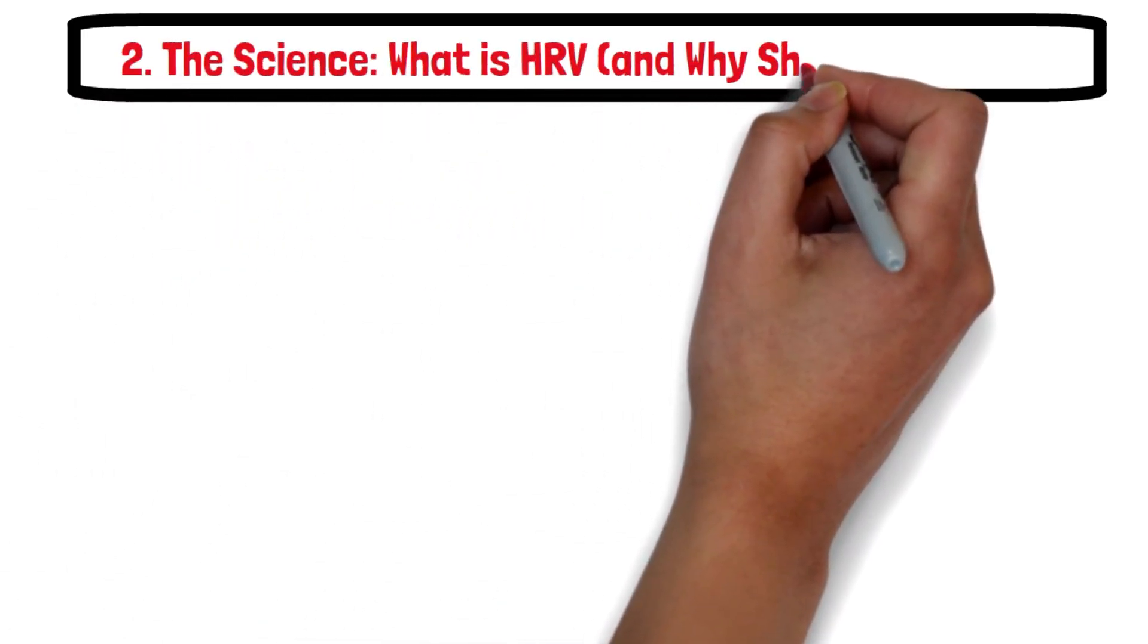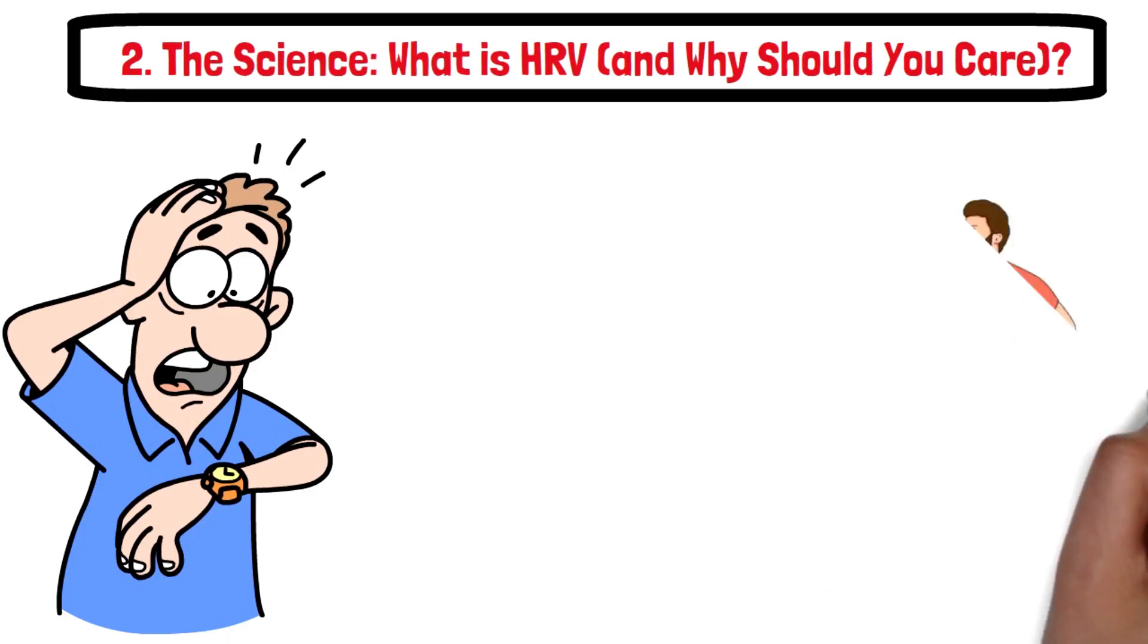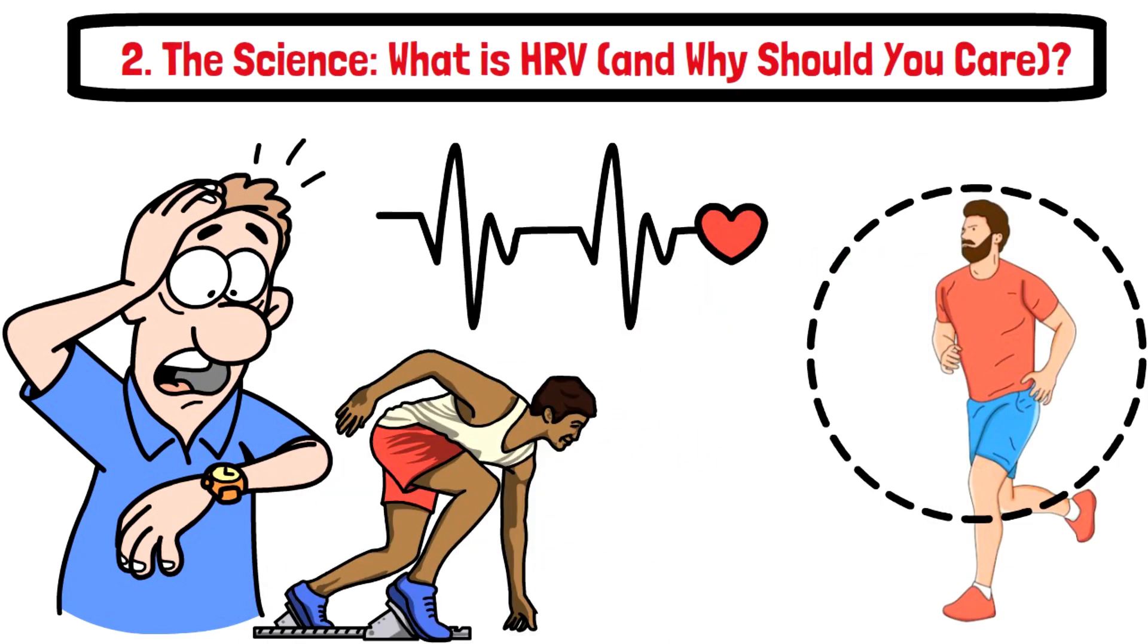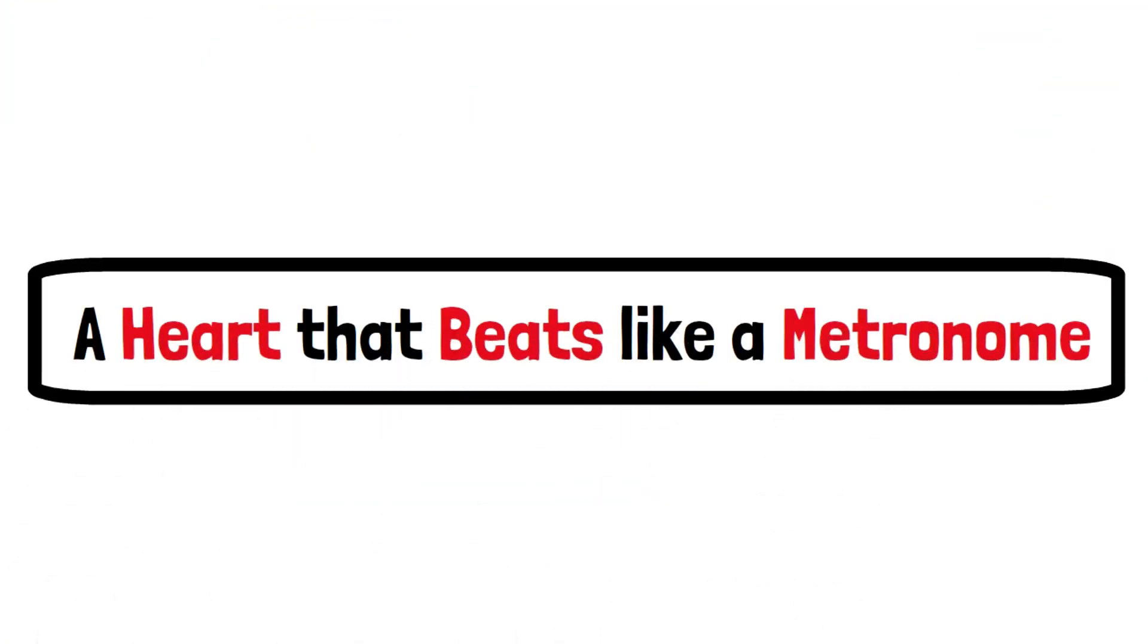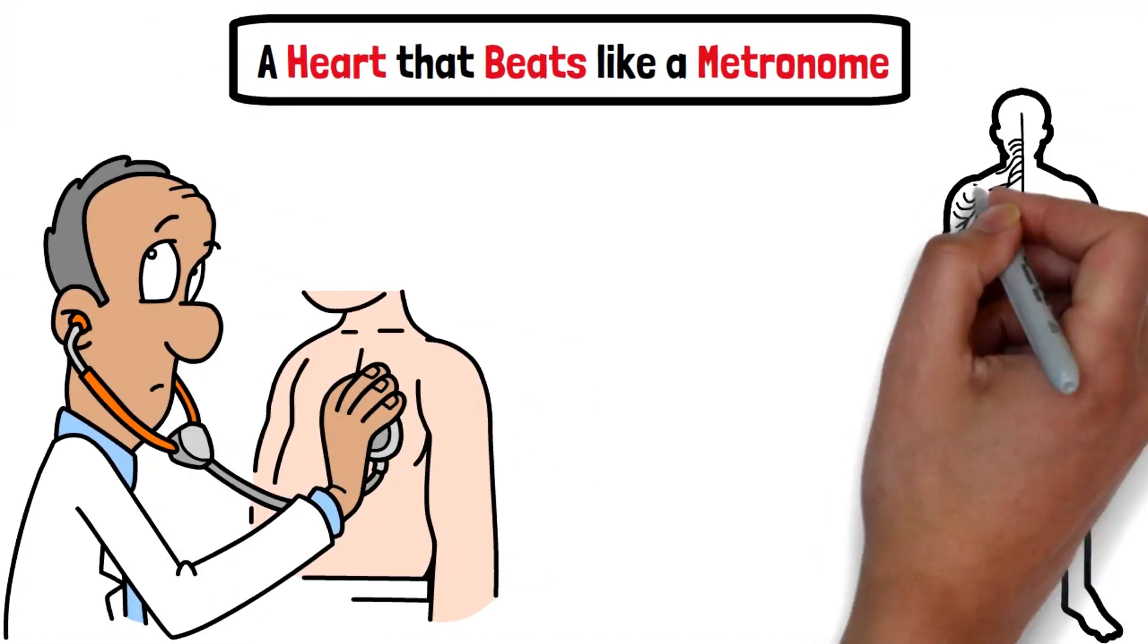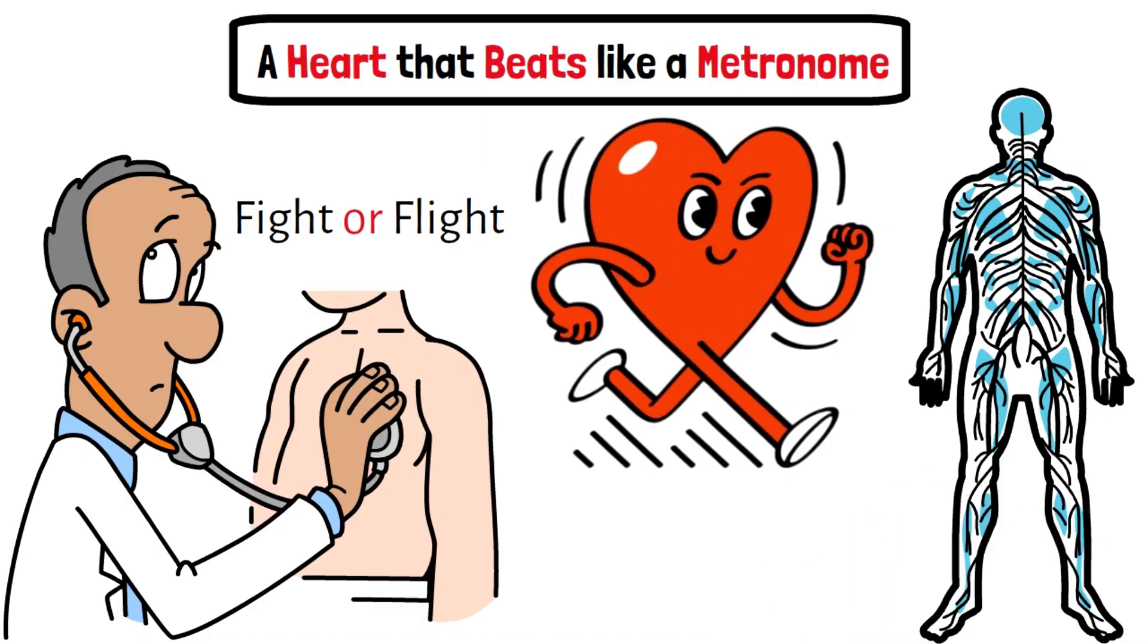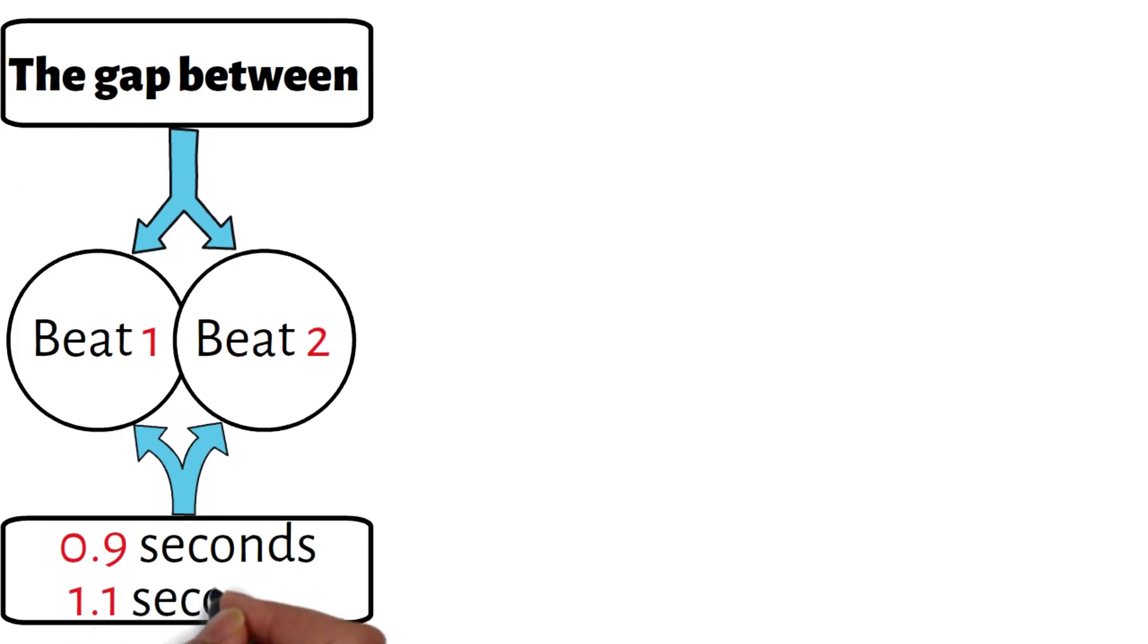What is HRV and why should you care? To understand why the watch lies, you have to understand the metric it uses to judge you: it's called Heart Rate Variability, HRV. Most people think a steady heartbeat is good, like a metronome: tick, tick, tick, tick. Wrong. A heart that beats like a metronome is a stressed heart. It means your nervous system is rigid, it's in fight or flight mode. A healthy, recovered heart is like a jazz drummer—it's variable. The gap between beat one and beat two might be 0.9 seconds, the next gap is 1.1 seconds.